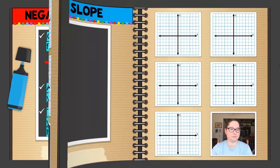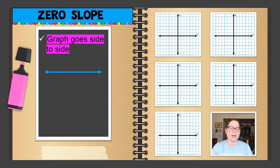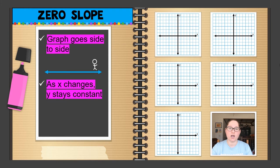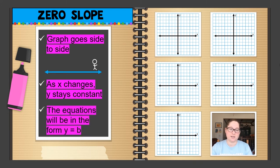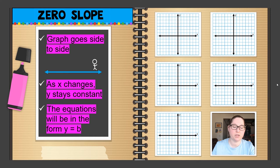Let's look at our third type of slope: zero slope. With zero slope, the graph goes side to side. My little guy on the left side stays constant going right — not going up, not going down, like a flat line. As X changes, Y stays constant, always the same value. The equations are in the form y equals b. The slope is zero — there is a slope, it's just constant at zero. A word you will hear with zero slope is horizontal, meaning the graph is horizontal.